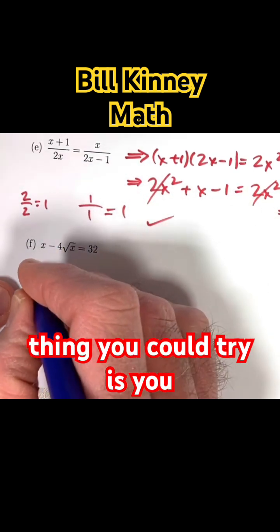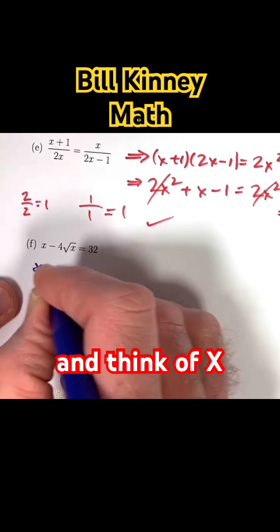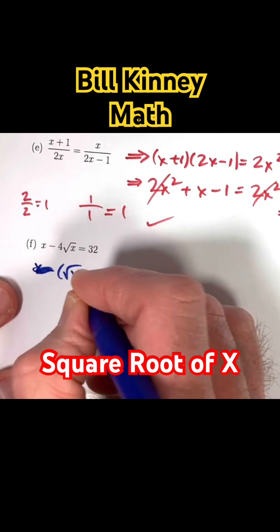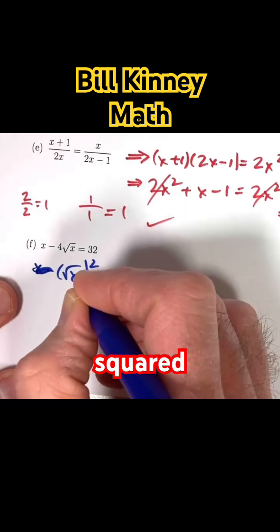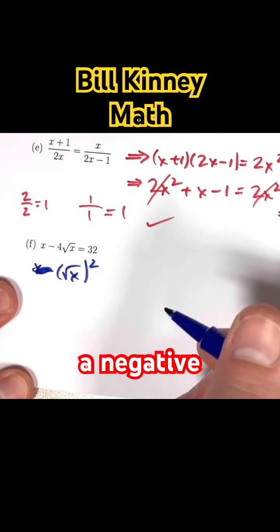One thing you could try is you could try subtracting 32 from both sides and think of x as square root of x quantity squared. We are thinking about real solutions here. x would not be allowed to be a negative number here.